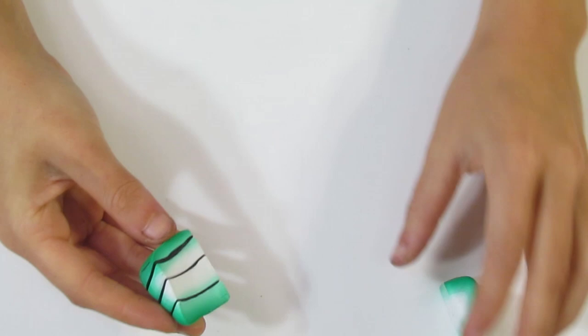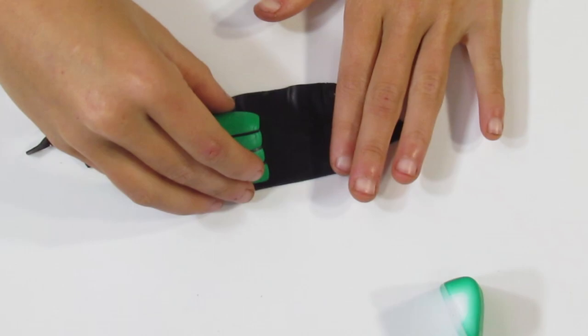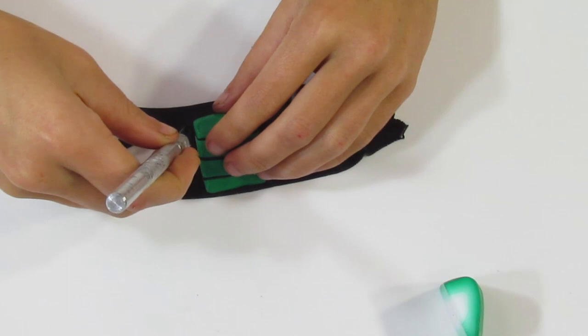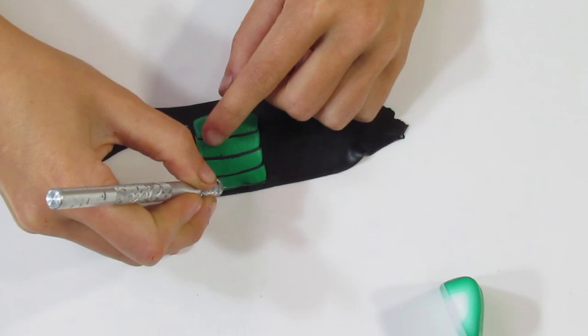So now what we need to do is we need to have a vein down this way. So we'll bring over the black again. And we'll pop it face down onto the black. Make sure it's stuck nicely. We'll trim away the excess. So we cut out a shape.